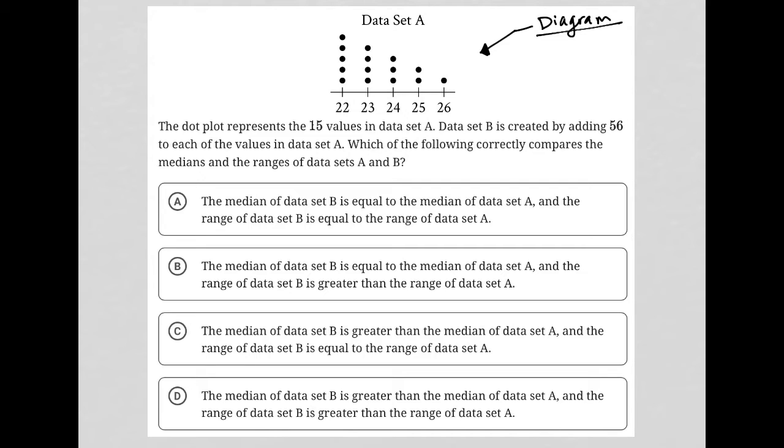So how will we read this dot plot? Data set A has five 22s, four 23s, three 24s, two 25s, and one 26.